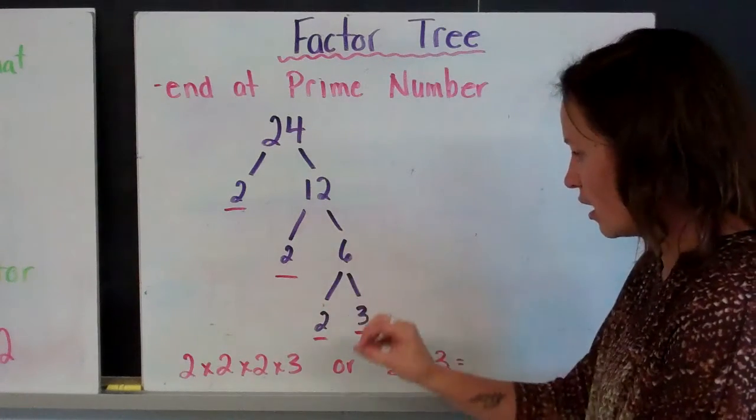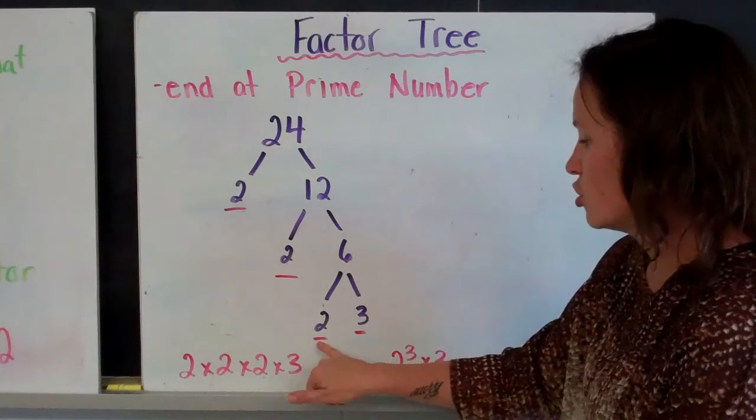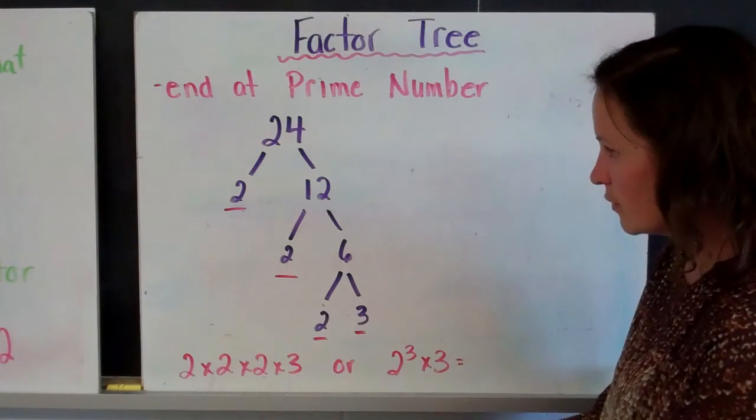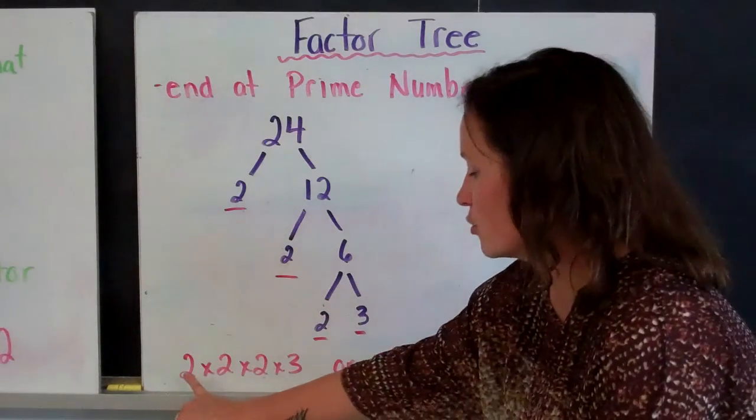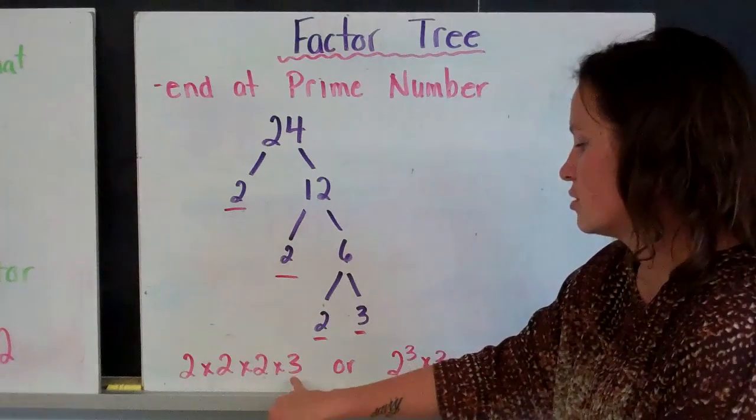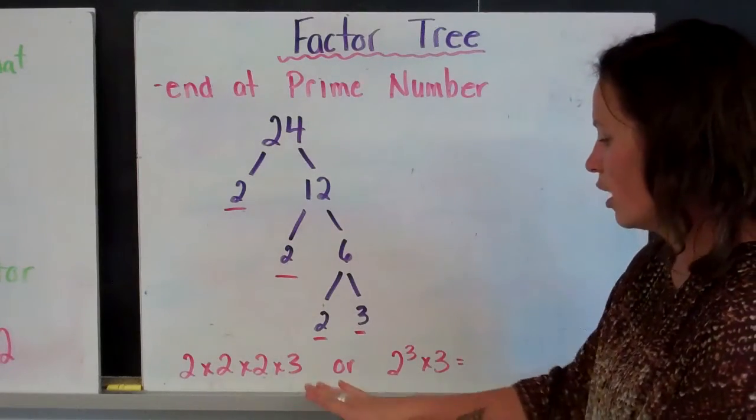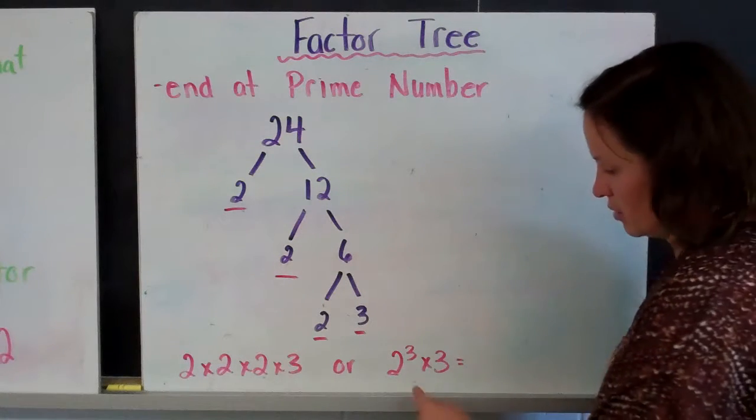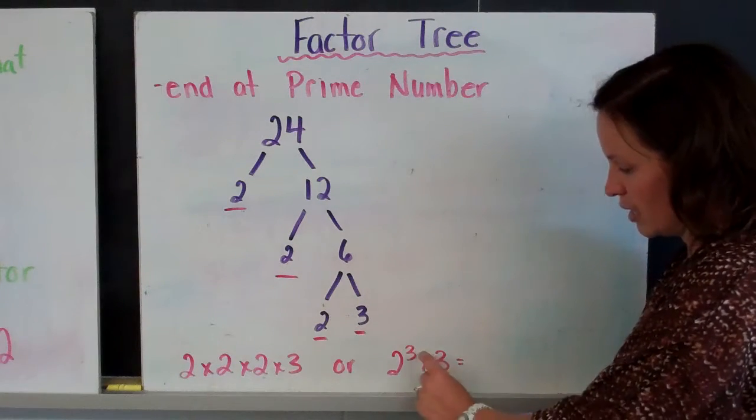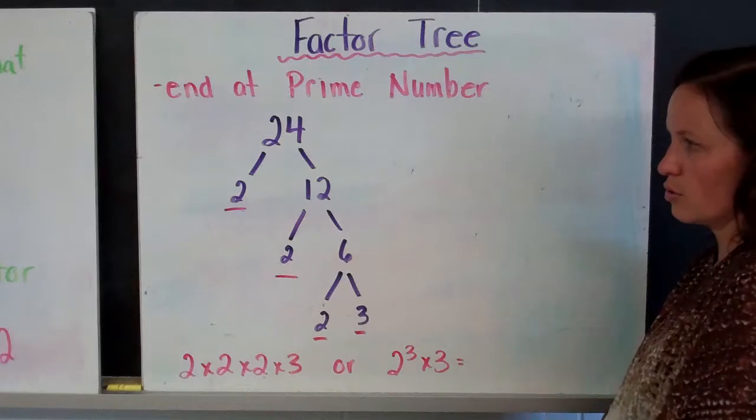I can divide that down to 2 times 3. And so these are all prime numbers. So at the end, I could write 2 times 2 times 2 times 3 equals 24. Or you take all of the 2's and you write it as an exponent. 2 to the power of 3 times 3 equals 24.